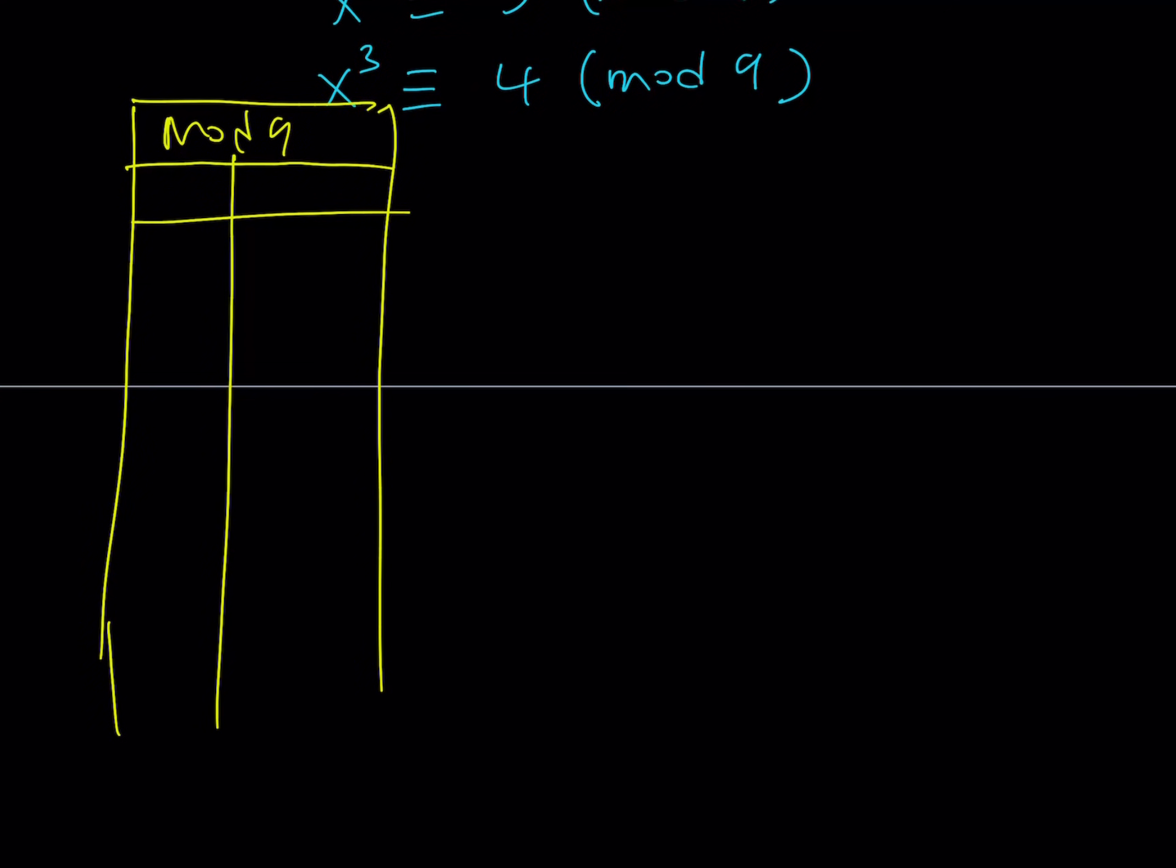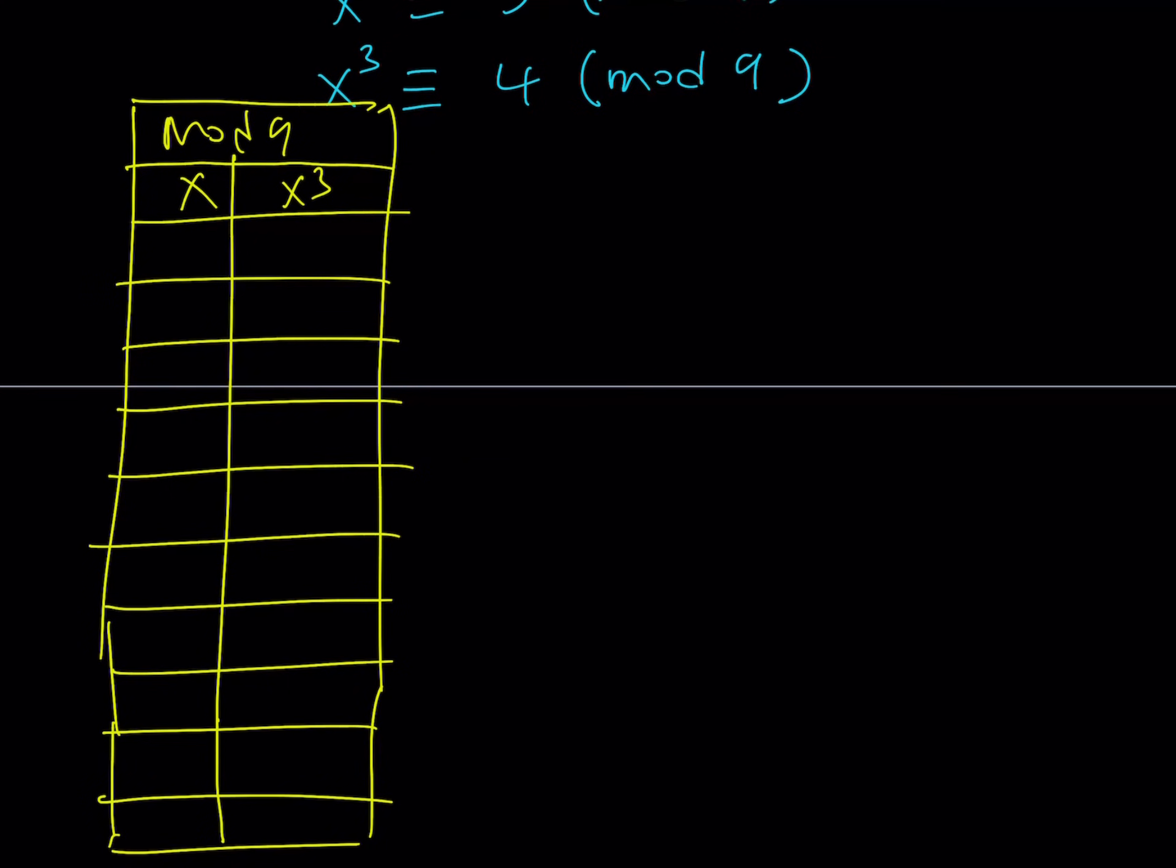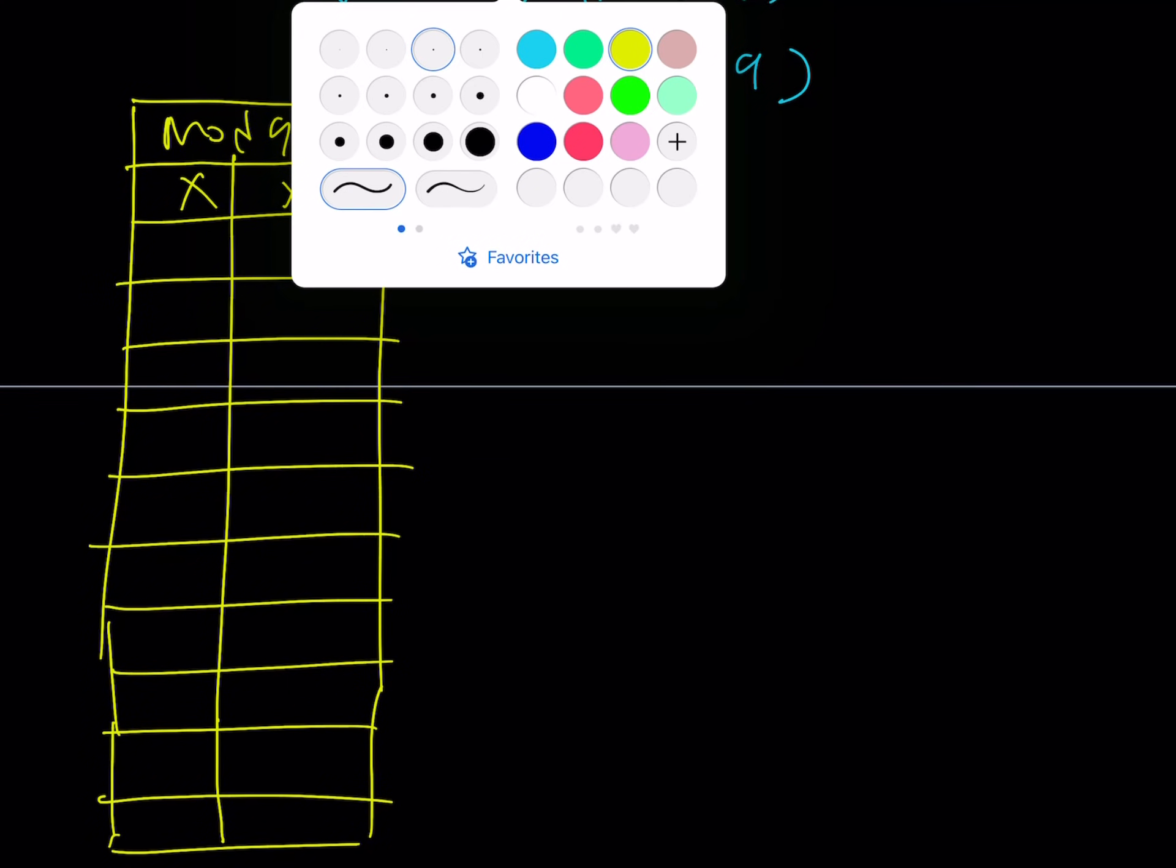And, I'm going to list x and x³. So, basically, what I'm going to do is, I'm going to write all the numbers in mod 9, and cube them. And, then, look at their cubes. So, 1, 2, 3. Let's just get started. We could probably add a little bit more rows onto it. This is probably going to be good enough.